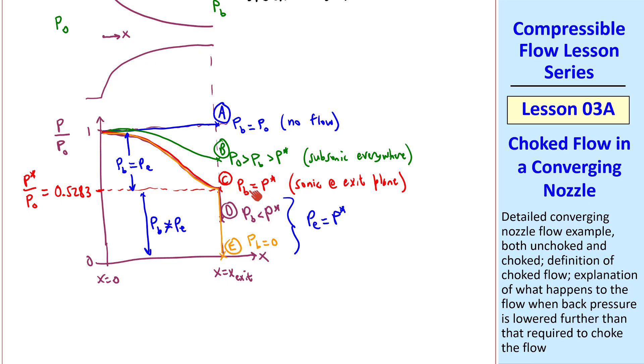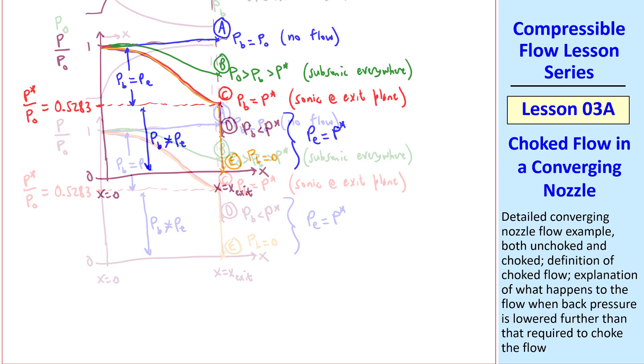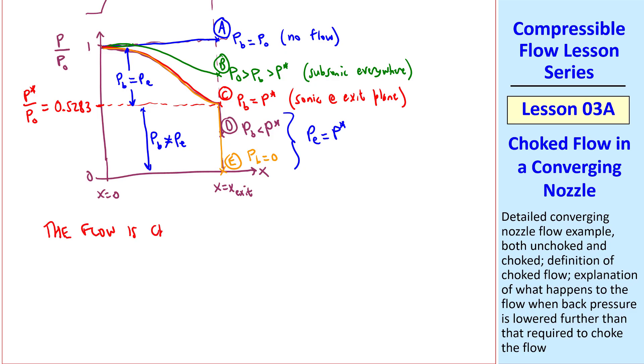For any back pressure less than P-star, such as cases D and E, the flow through the nozzle doesn't change at all, compared to case C. The terminology is that the flow is choked, meaning it's fixed or stuck, when Pb is less than or equal to P-star. And Me, the exit Mach number is 1, in other words, sonic, or critical, at the exit plane for any condition like this, namely C, D, and E in our sketch.